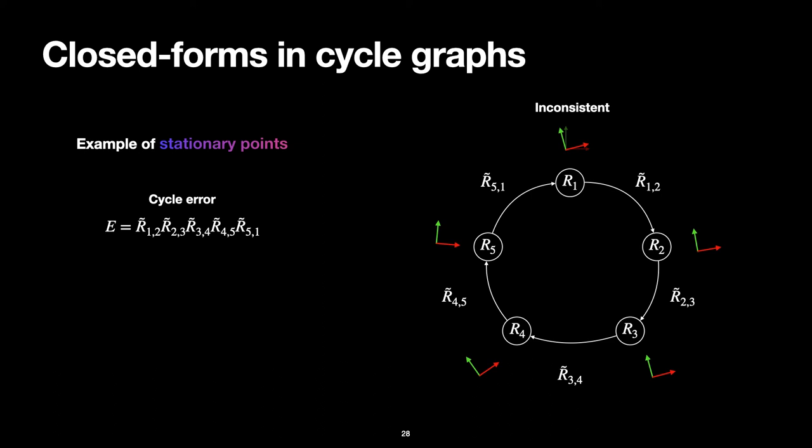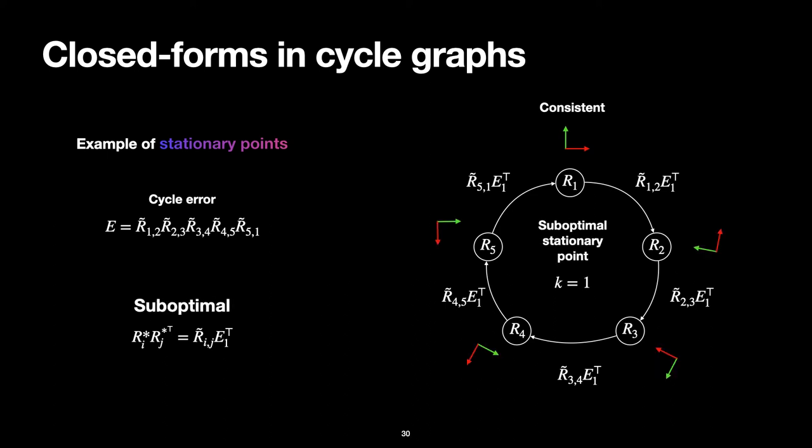The global optimum is attained by spreading the error evenly over all edges of the graph, or k equals zero in terms of the notation used earlier. To obtain another stationary point would be to redistribute the error in a different manner, and we have an entirely different solution for this suboptimal stationary point.